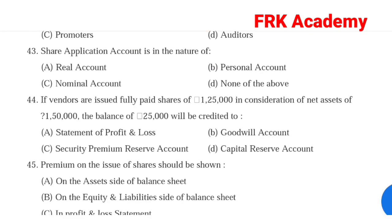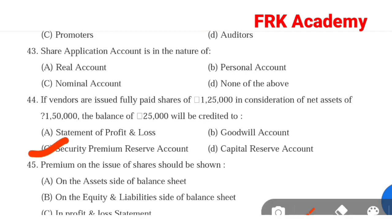Question 44: If vendors are issued fully paid shares of Rs. 1,25,000 in consideration of net assets of Rs. 1,50,000, the balance of Rs. 25,000 will be credited to. Answer: Option C, securities premium reserve account. The excess of net assets over shares issued is credited to the securities premium reserve account.